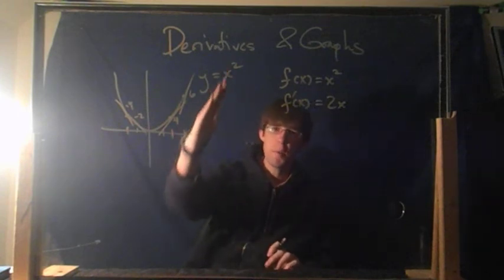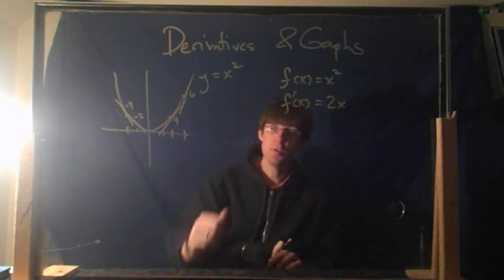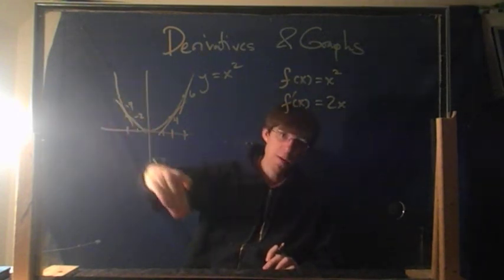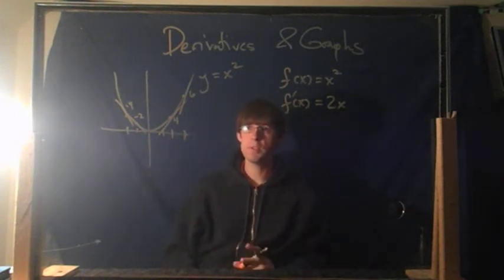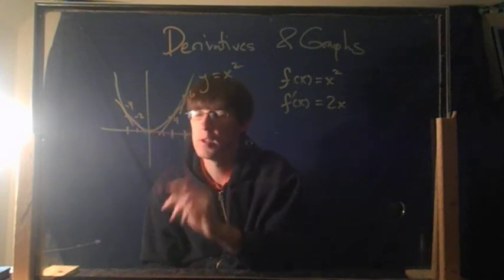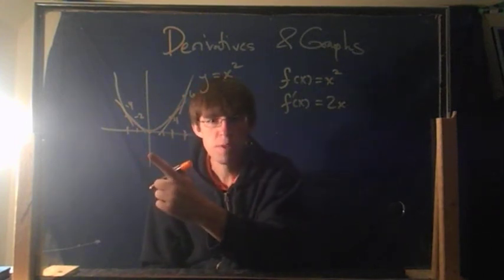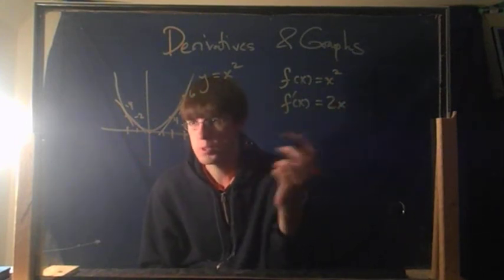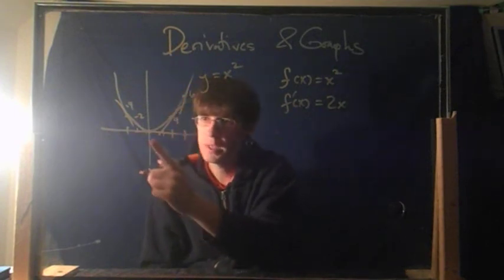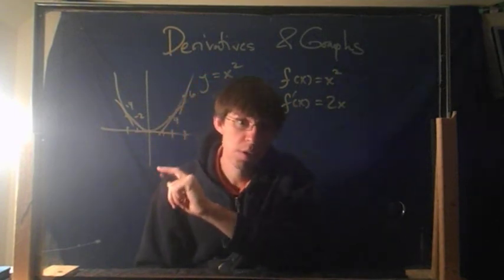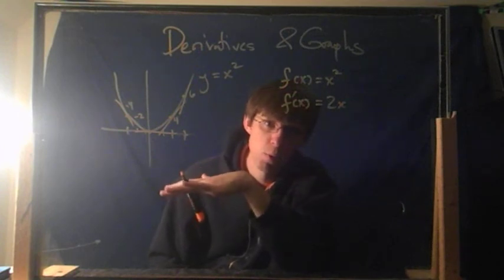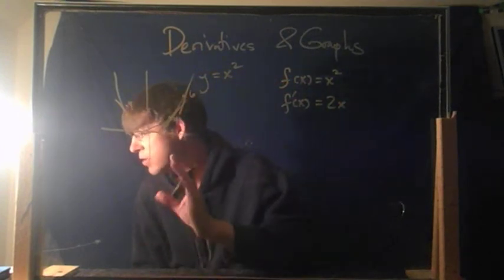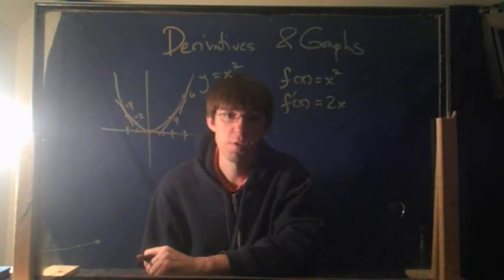These ones are positive. Positive slope means going up as you go to the right. Negative slope means going down as you go to the right. The formula seems to be pretty good. What's the slope right here? That would be x equals 0. You go 2 times 0, which is 0. Slope is 0. And it looks like slope 0 on the curve — slope 0 means flat, horizontal.